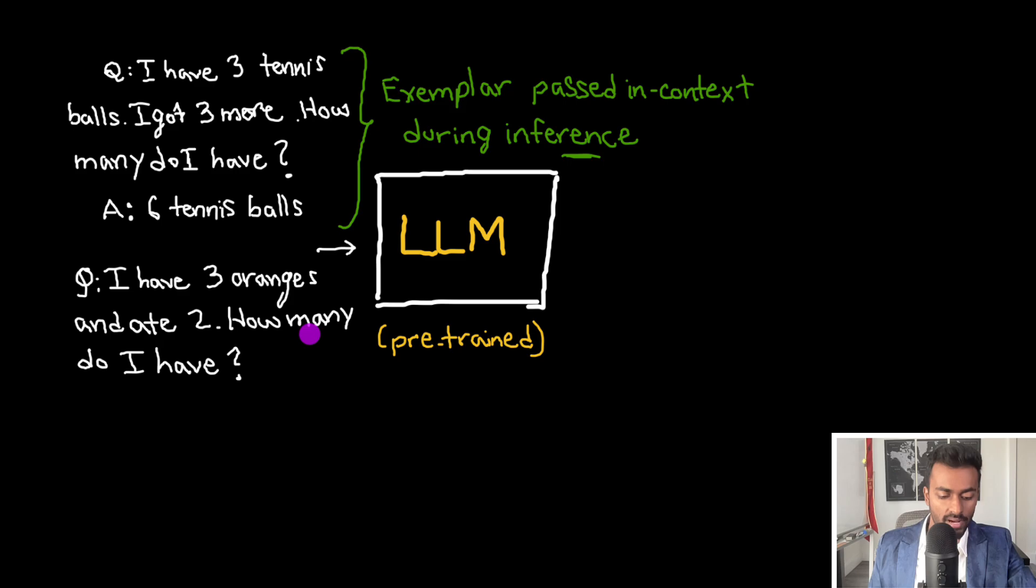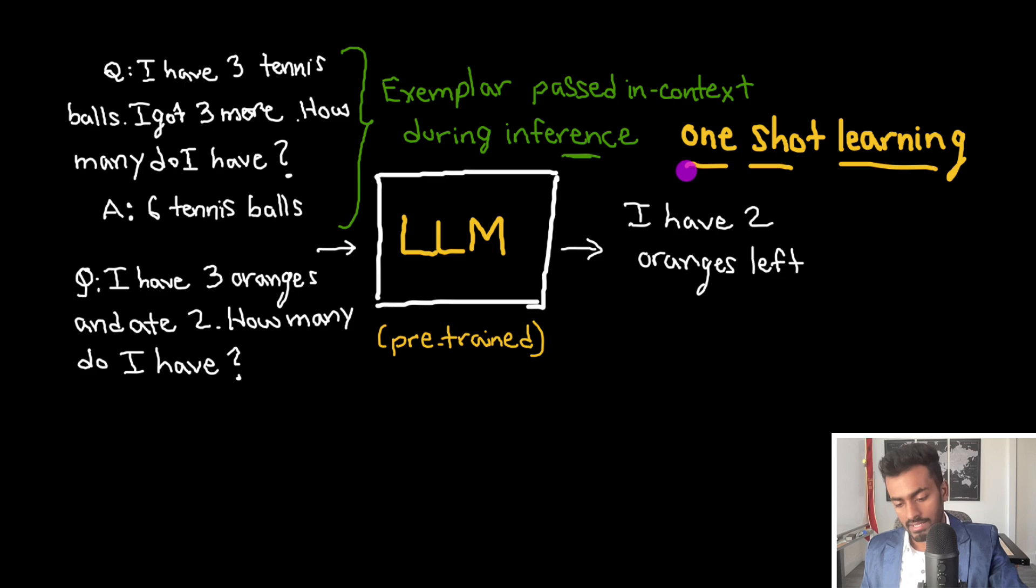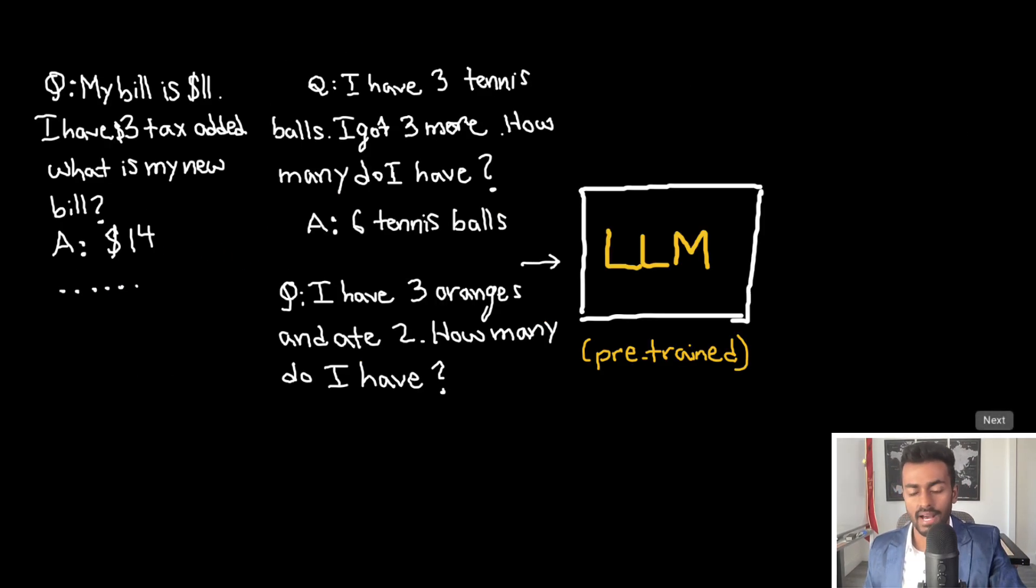We then pass in a question. And then we will now expect that the LLM will try to respond similar to the example that we gave previously. Now this here is known as a one shot learning. It is one shot because we passed in one example before passing in our actual request.